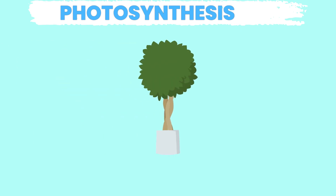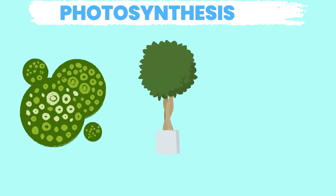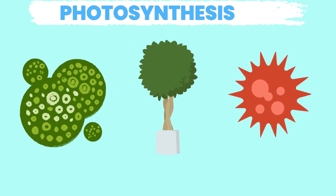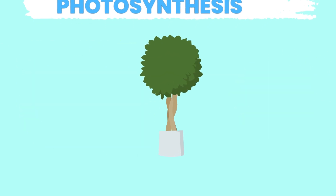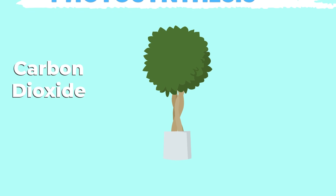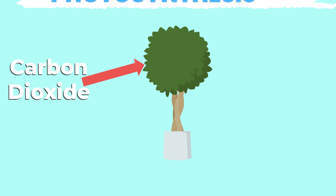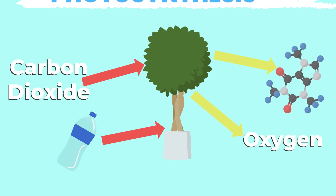Photosynthesis is a biochemical process where plants, algae, and some bacteria use sunlight energy to convert carbon dioxide and water into glucose and oxygen.